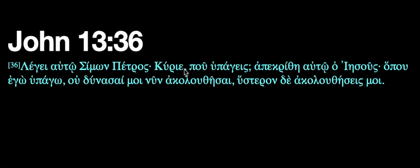Then we've got 'pou' as a question. This is no longer a question — it's an indirect question: 'where I am going'. So we had 'hypageis' before; now we're simply changing the form to 'hypago'. If it's an '-o' ending, it's 'I am doing it'. So 'where I am going'. Now we have 'ou', so we can tell it's negative — 'ou dynastai': 'you are not able'.